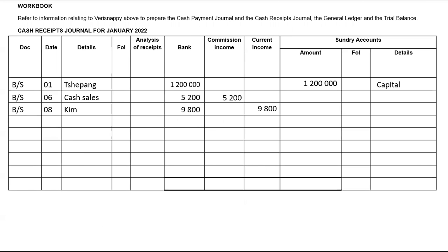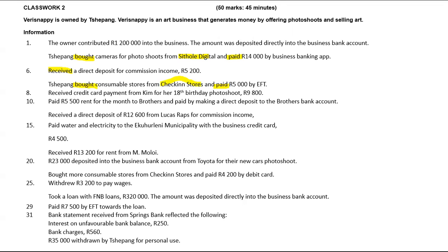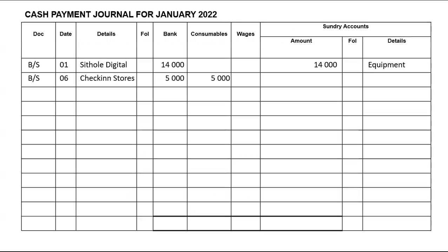On the 10th, we paid 5,500 rent for the month to Brothers, paid by making a direct deposit. That will be recorded in the cash payments journal. You will write BS, the date will be the 10th, we paid it to Brothers — it was for rent, so it goes under bank as well as sundry, 5,500, and this will be rent expense.